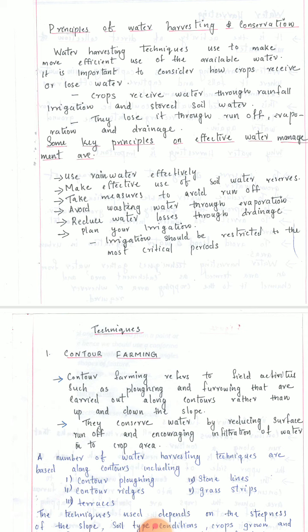Next is to avoid wasting water through evaporation. We need to cover surface water resources or the soil surface in order to reduce evaporation. Next is to reduce water losses through drainage. Drainages allow water to flow on the surface instead of going into the earth surface, so we need to reduce water losses by providing proper drainage facilities. Plan your irrigation such that judicious use of water is made. Irrigation should be restricted to the most critical periods — stored water from the rainy season can be used for agricultural activities in the dry season.